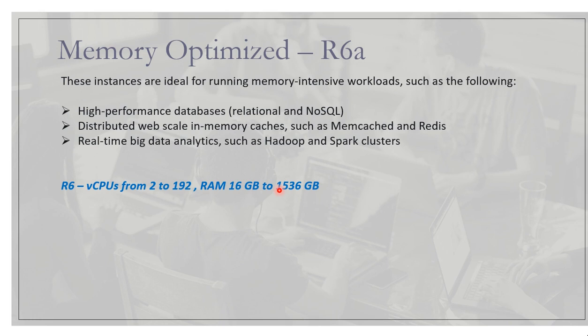The R6a series offers more RAM compared to R5 — virtual CPUs from 2 to 192 and RAM from 16 GB to 1536 GB. As a solution architect, when suggesting memory optimized instances based on application requirements, you also need to consider cost. As you go higher in the series from R5 to R6, you get more RAM and virtual CPUs but will be charged more for the additional physical hardware.